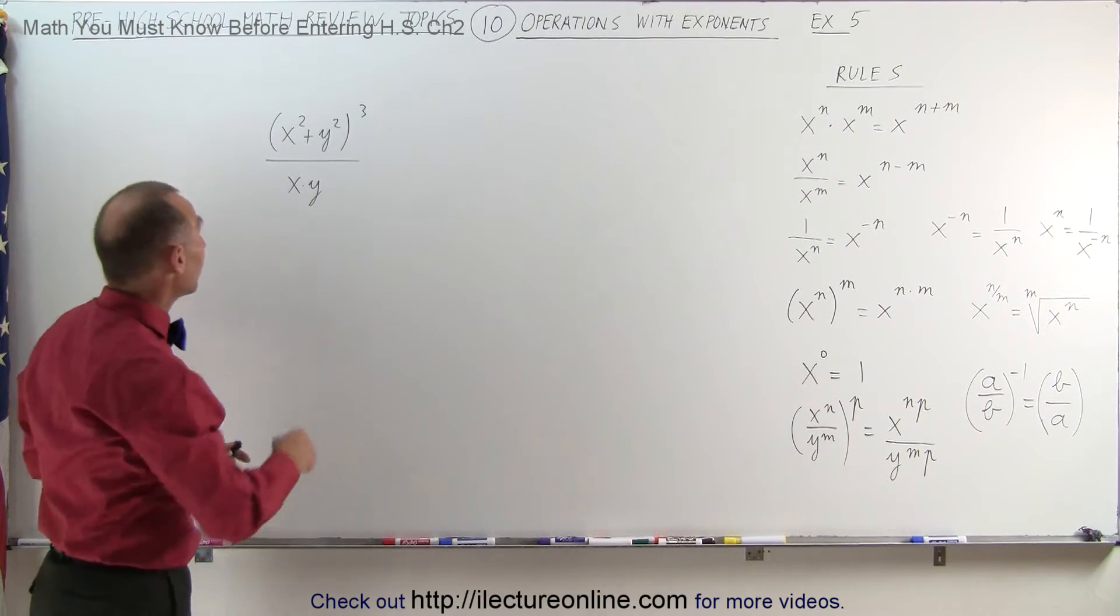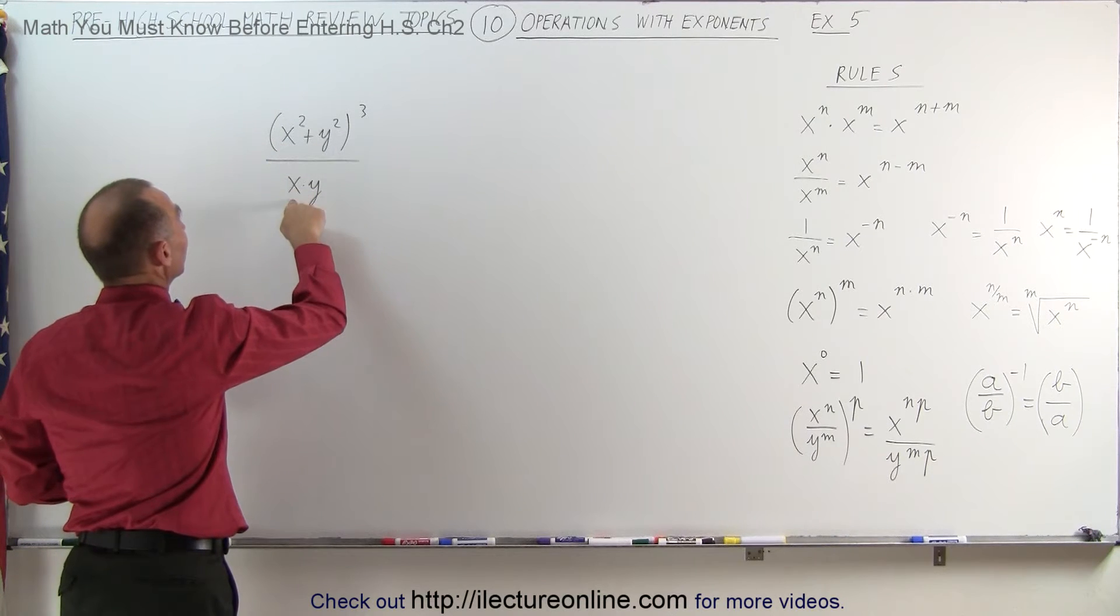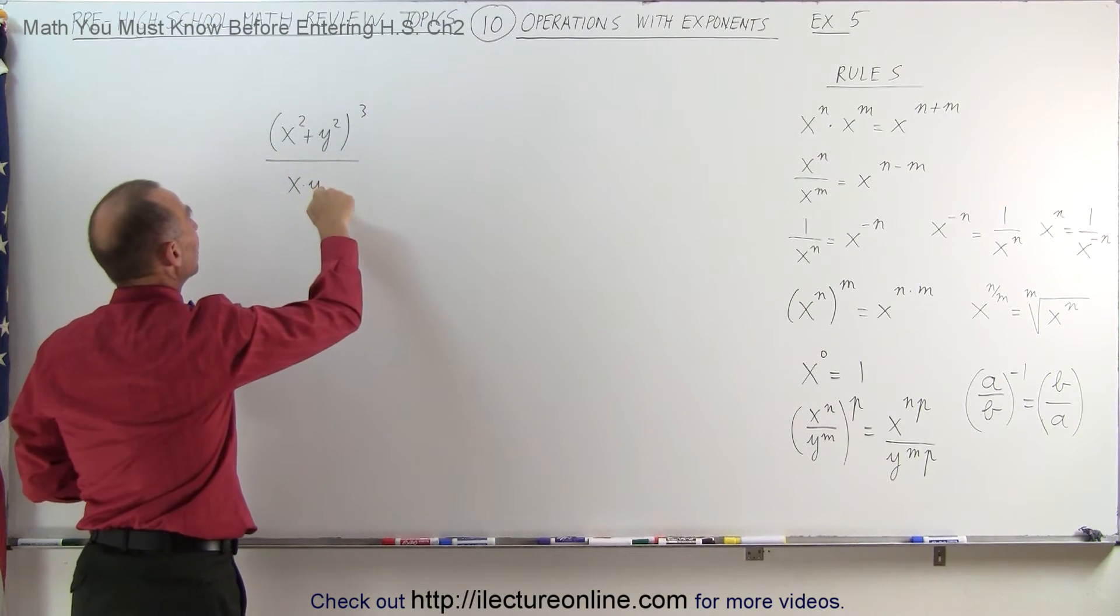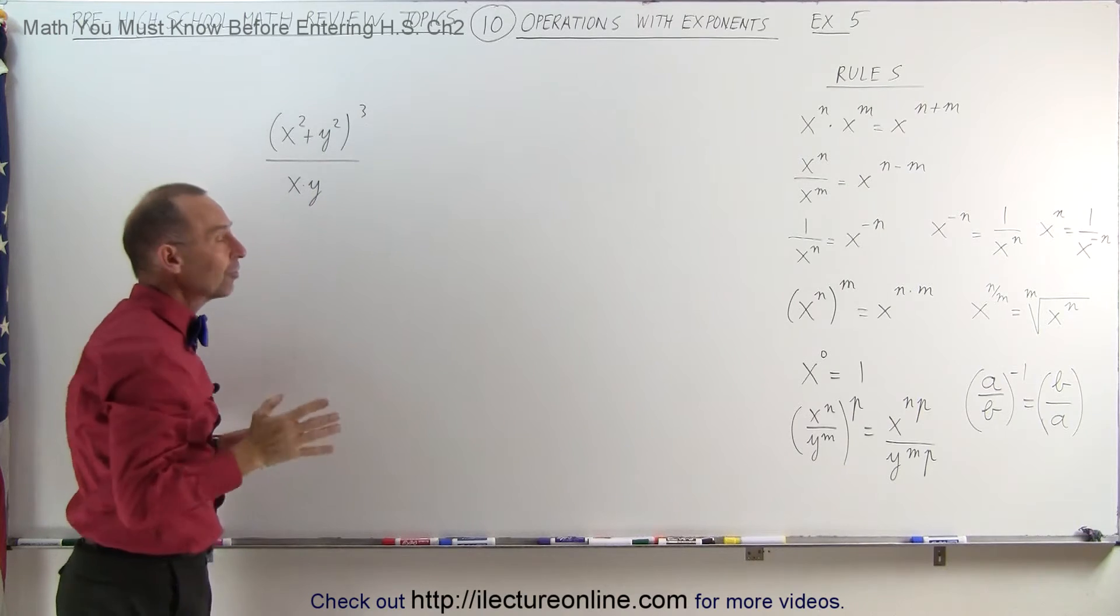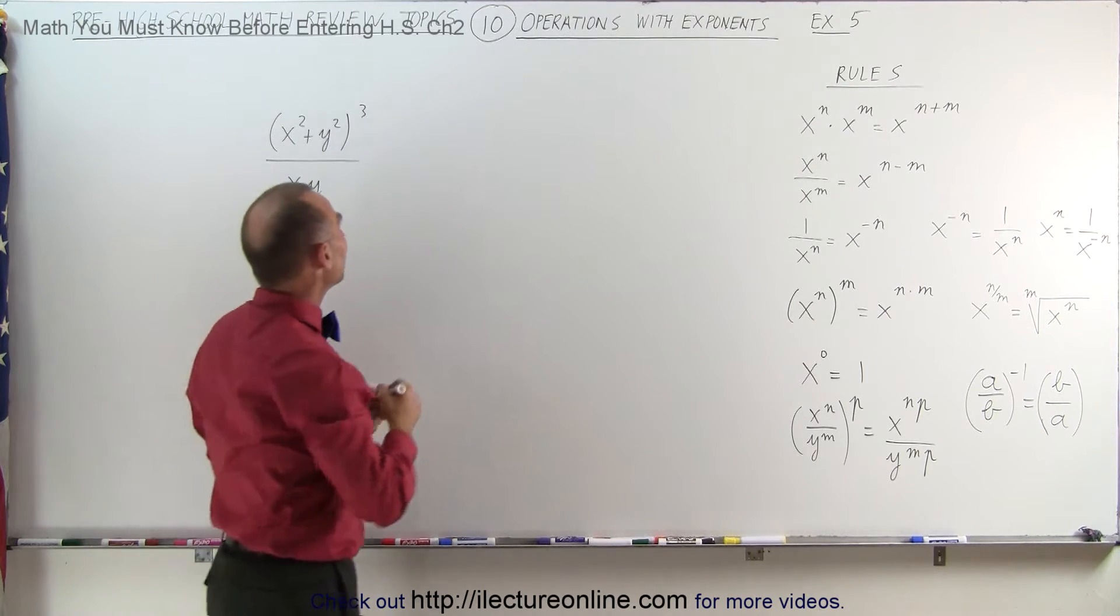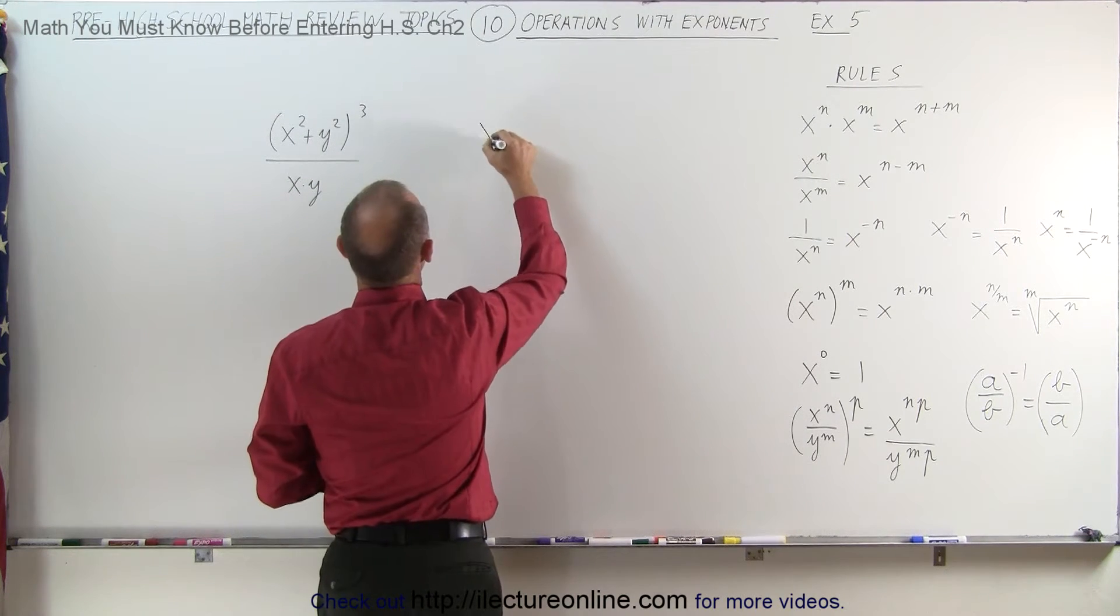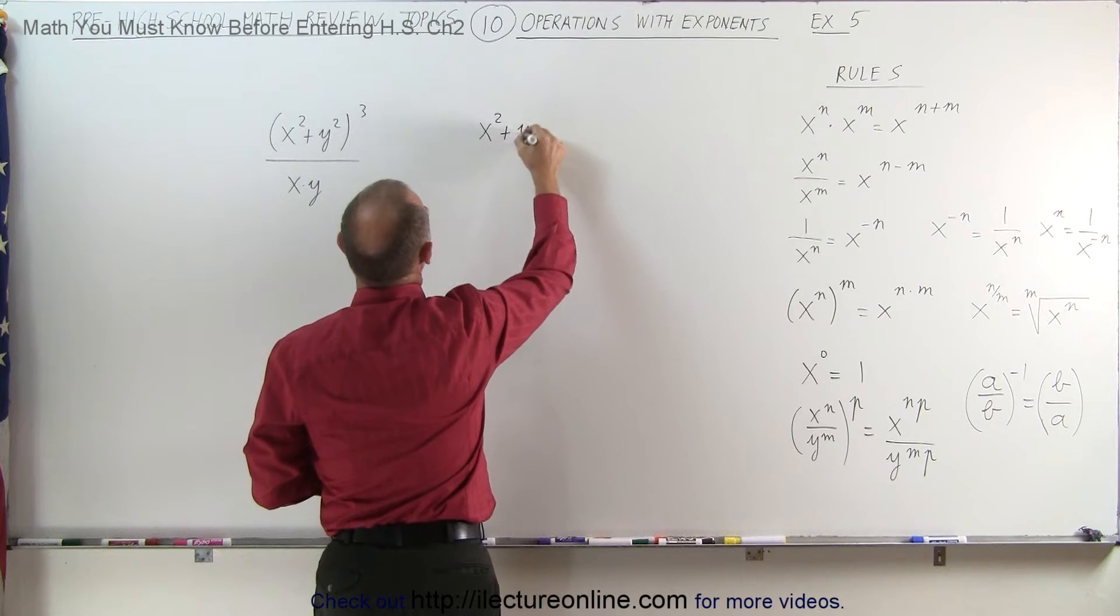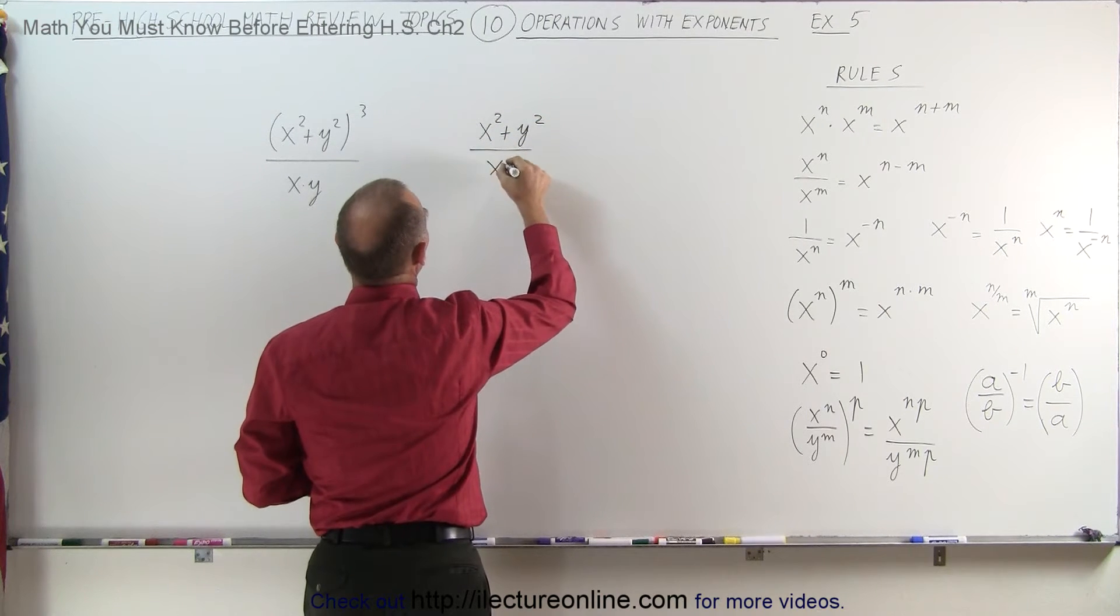It's very tempting to say, we have x squared here, we have an x here, we can divide x into here, we can divide y into there. It turns out you cannot do that, even if it was written like this. If we had x squared plus y squared divided by x times y,